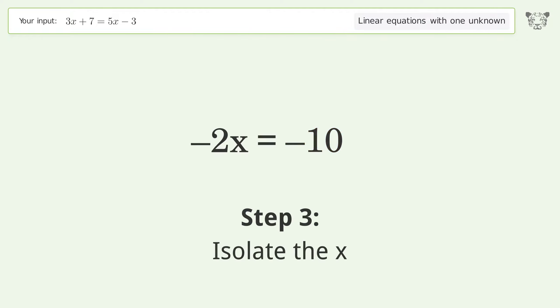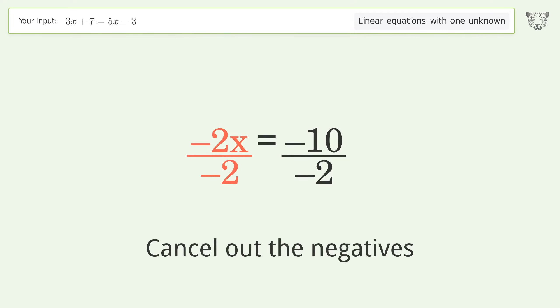Isolate the x. Divide both sides by negative 2. Cancel out the negatives.